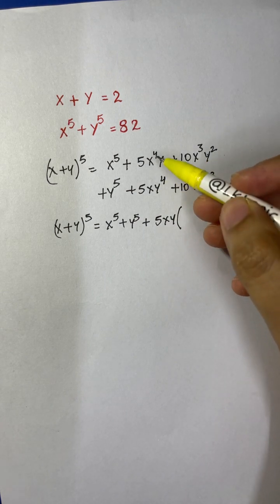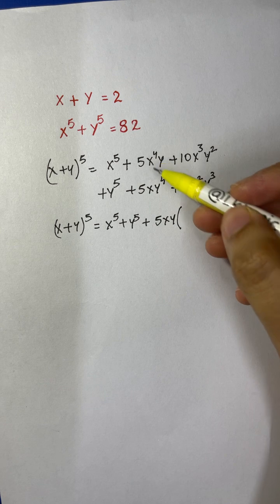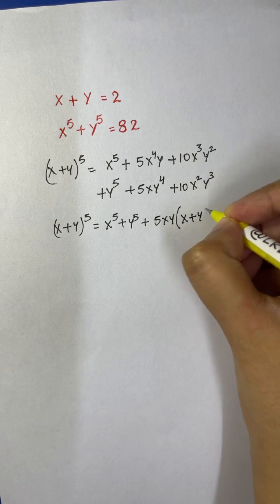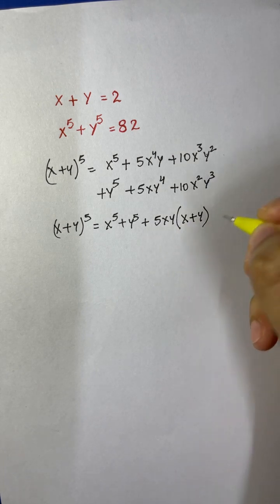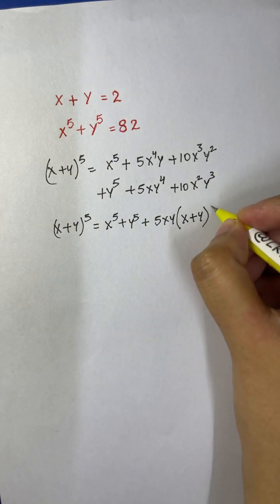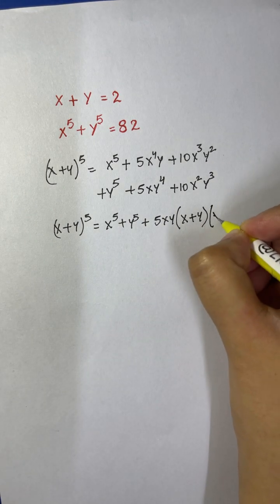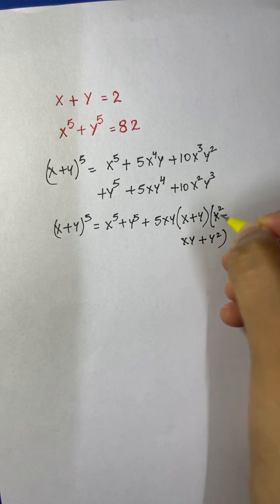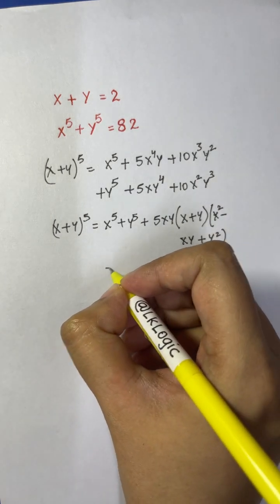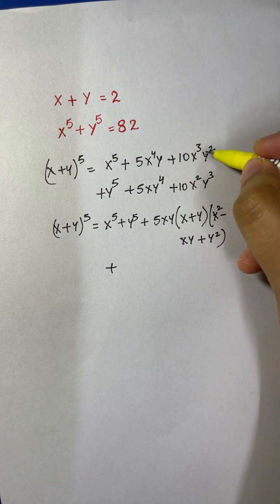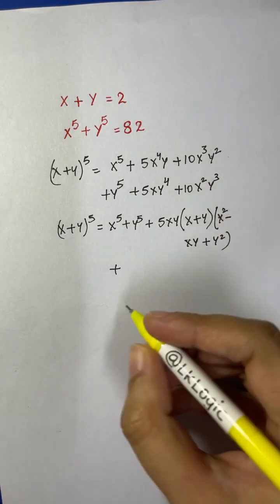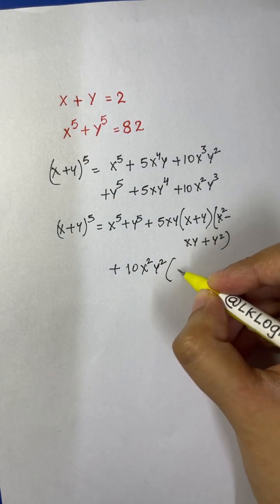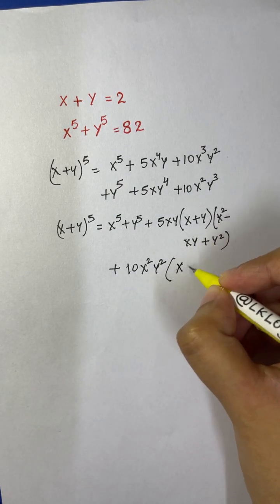What I am left with is the cubic expression x cubed plus y cubed. When I expand that, I get (x+y) times (x squared minus xy plus y squared). And then I also have 10x squared y squared common, which gives me 10x squared y squared times (x+y).